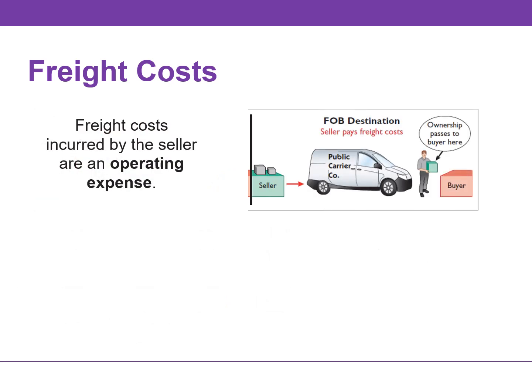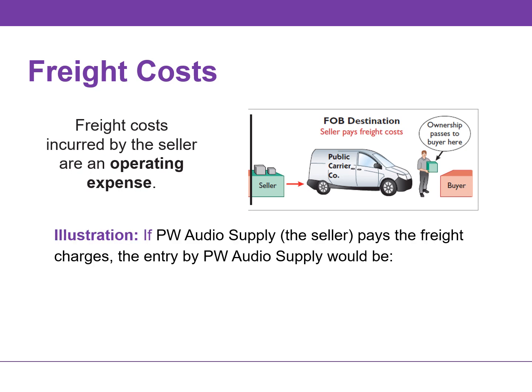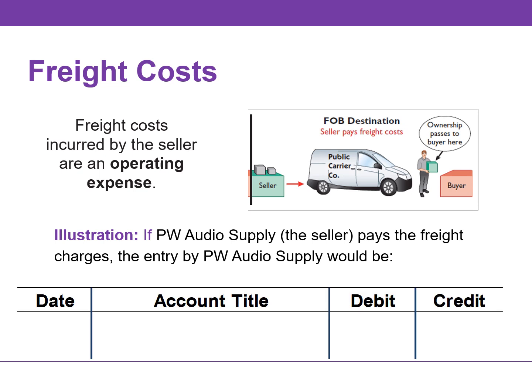If the seller pays the freight cost on outgoing merchandise, these costs are an operating expense. For example, if PW Audio Supply, the seller, pays the freight charges, the entry would be a debit or an increase to an expense account titled freight out — sometimes referred to as delivery expense — and a credit or a decrease to cash for $150.